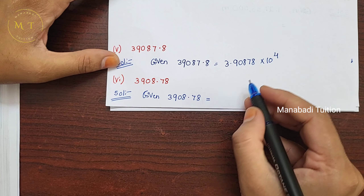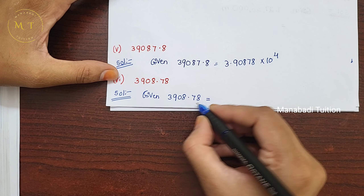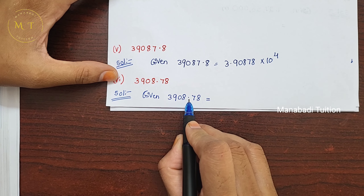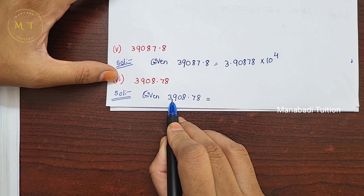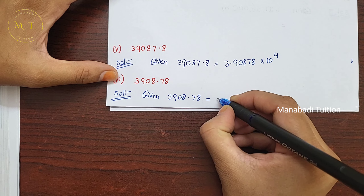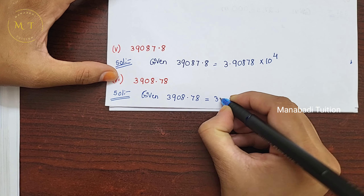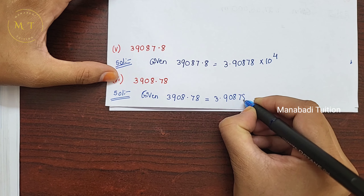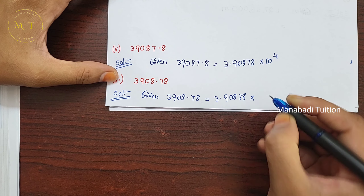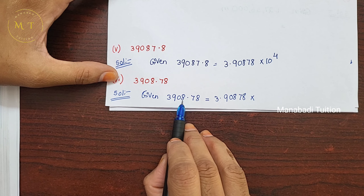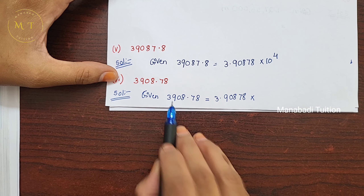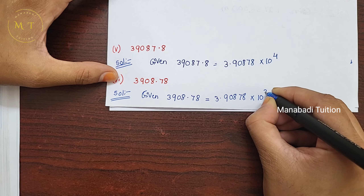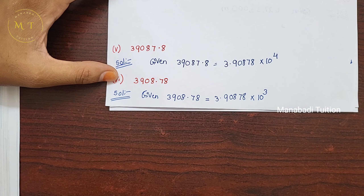Next, the last one — sixth one. Here already there are 2 digits before the point. We move to before 9, giving 3.90878. How many digits moved? 1, 2, 3 — so 3 digits moved. Therefore write 10 power 3.